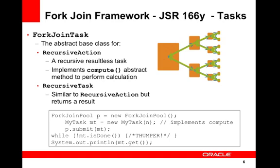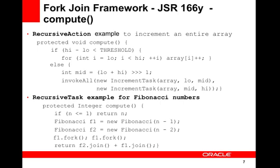The fork-join task performs a segment of the work wrapped as a ForkJoinTask subclass. Typically this is one of two more specialized tasks: either a recursive task or a recursive action. Looking at the fork-join pool example shown here, this is how you would begin execution when using the fork-join framework. In the compute section, you can see examples of how to implement a recursive action or a recursive task.